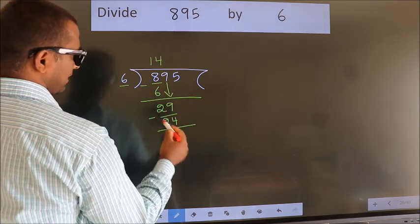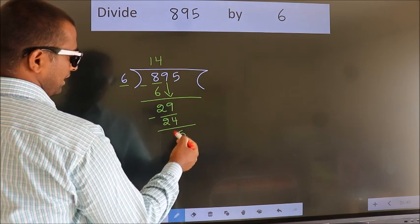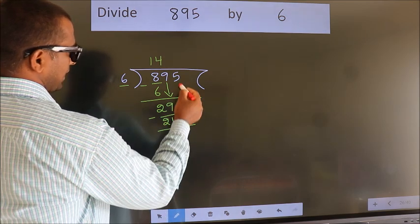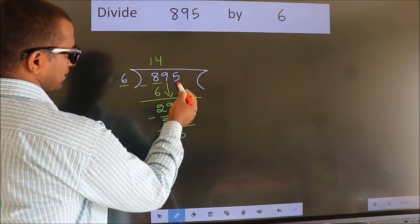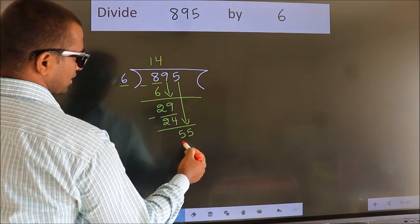Now we subtract. We get 5. After this, bring down the beside number. So 5 down. So 55.